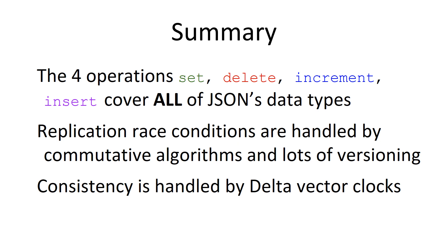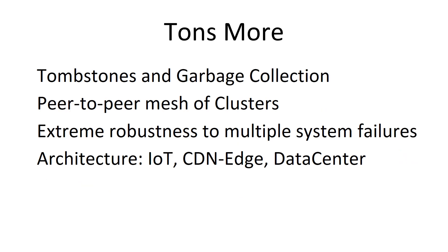To summarize: we covered four operations — set, delete, increment, and insert — and showed how they cover all of JSON's data types, and that CRDTs can cover all of JSON. We went into race conditions, did a lot of versioning, showed how commutative algorithms work, and finally got into causal consistency and delta vector clocks. The whole idea was to show the fundamentals of how CRDTs work in practice. There's a lot more to CRDT systems — they're bigger and more complicated with unique special attributes — but that's another 15 minutes. Thanks for your attention.